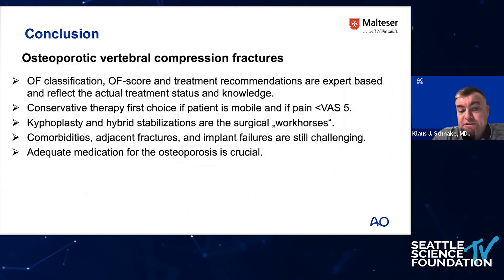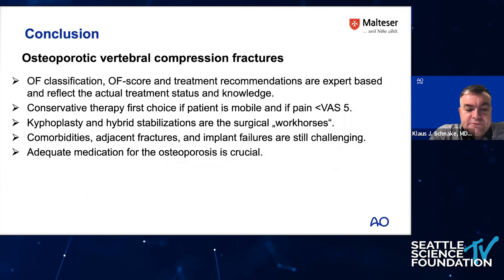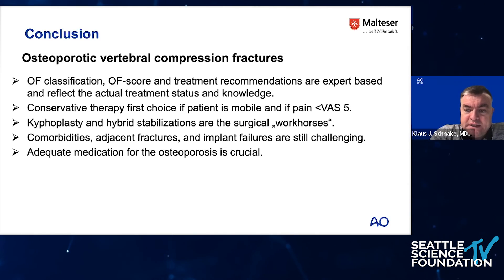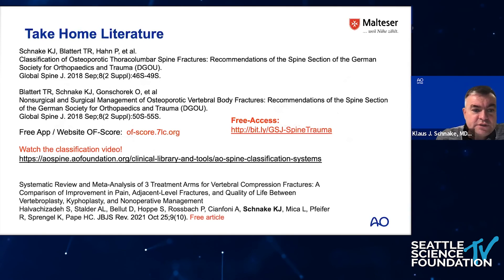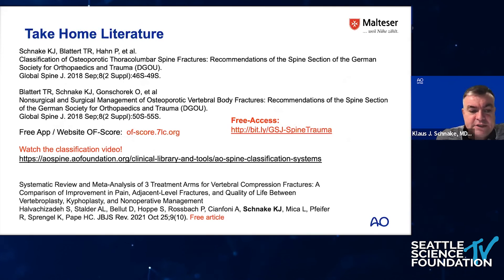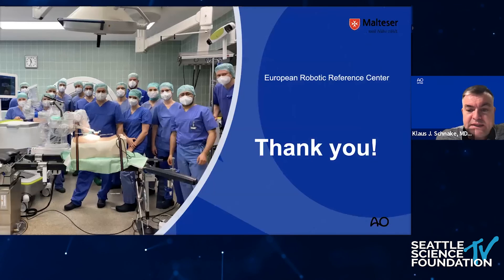In conclusion, the OF classification and the score, as well as the treatment recommendations, are still expert-based, but they reflect the actual treatment status and knowledge. Conservative therapy is definitely the first choice in mobile patients with relatively low pain. Kyphoplasty and hybrid stabilizations are the surgical workhorses. Comorbidities, adjacent fractures, and implant failures remain challenging. If you go for surgery, please don't forget to start adequate medication for the osteoporosis. Our open-source publication from Global Spine 2018 is available, and there is already an app available for the classification, along with an AO Spine video about the classification.